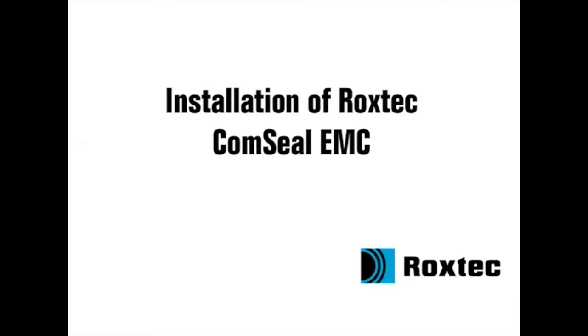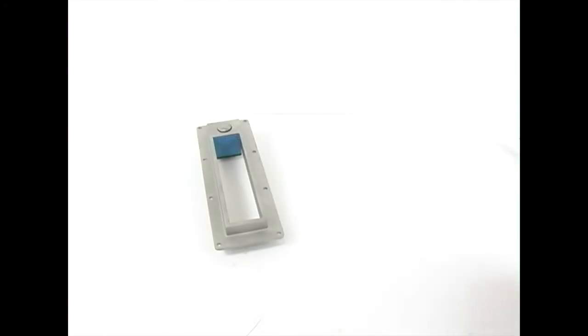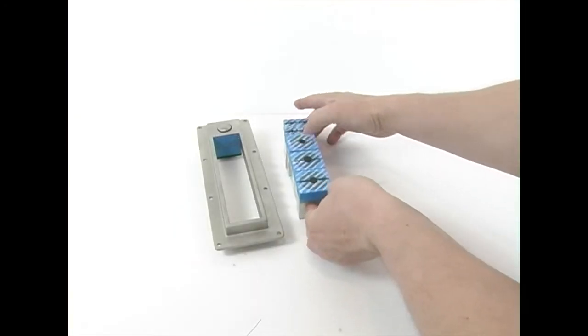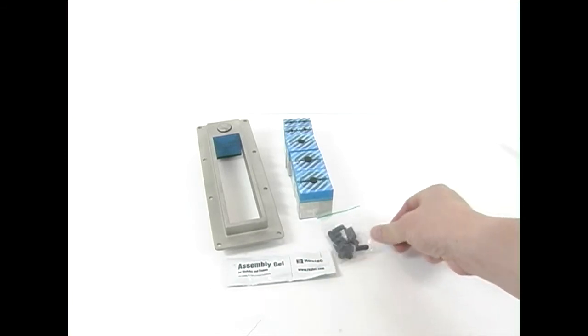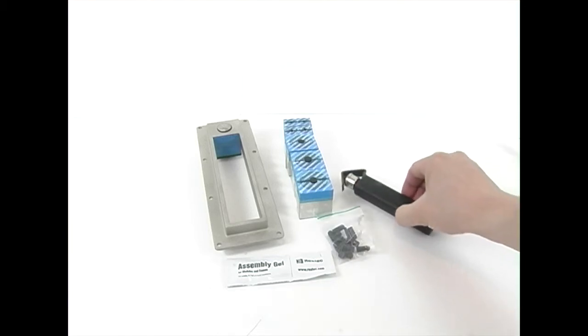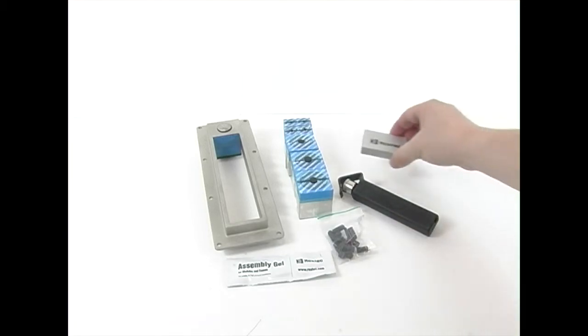Installation of Roxtec ComSeal EMC. To install the Roxtec ComSeal EMC, you need the ComSeal EMC frame, Roxtec EMC sealing modules in ES or PE versions, and the Roxtec assembly gel. A tool to strip the cable sheath is recommended.